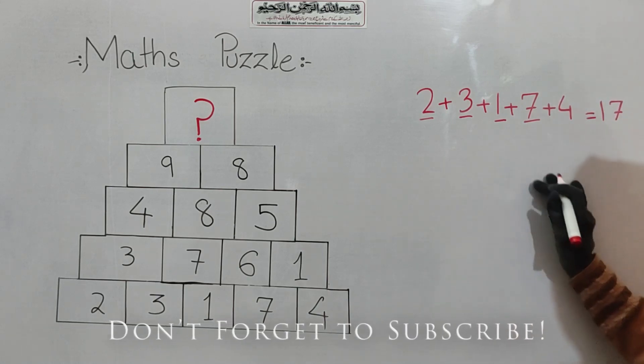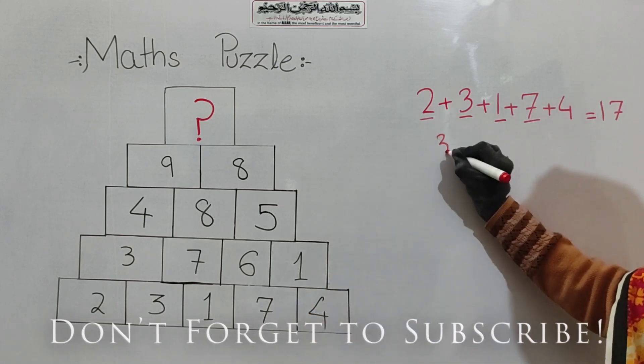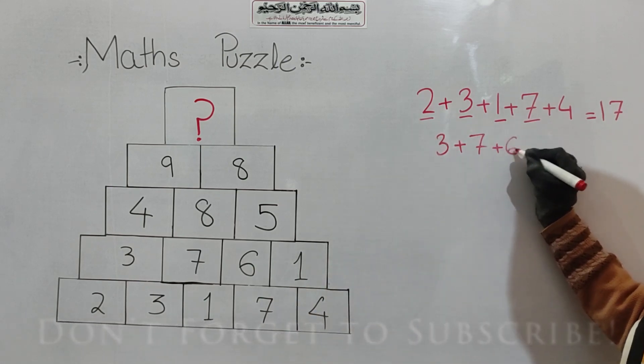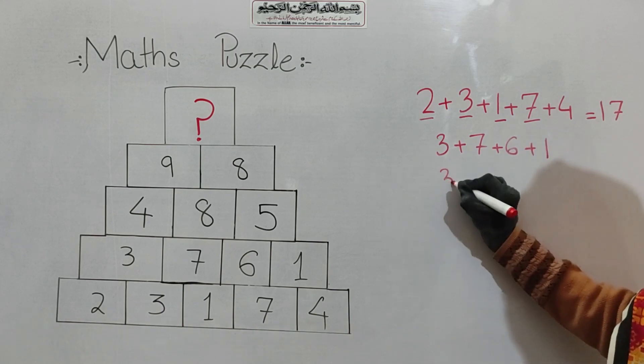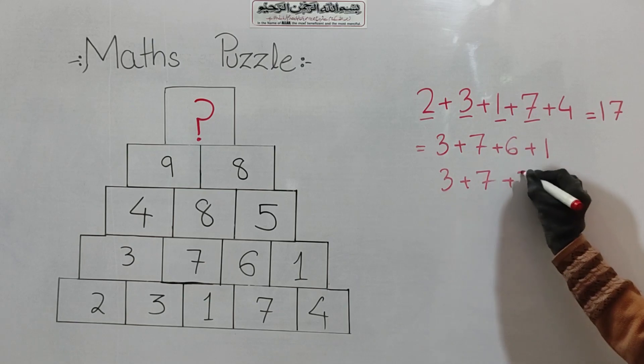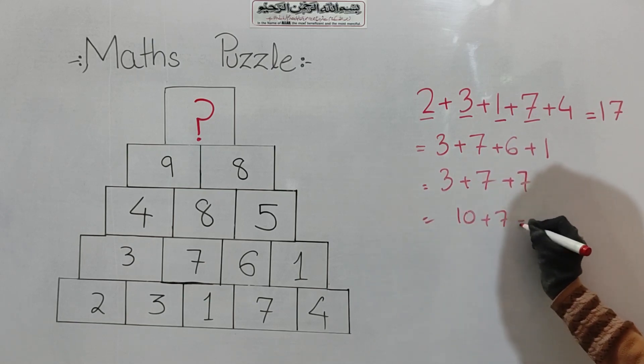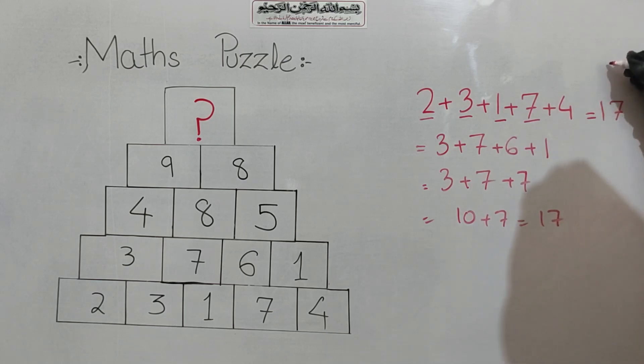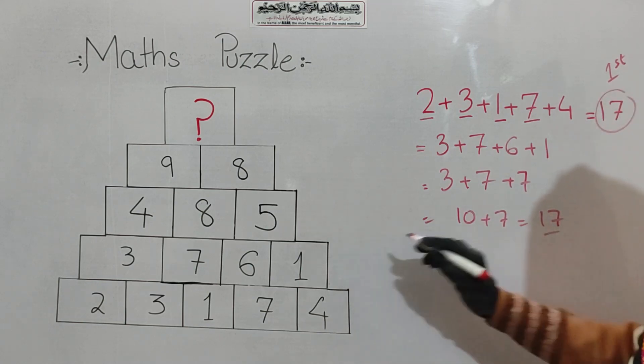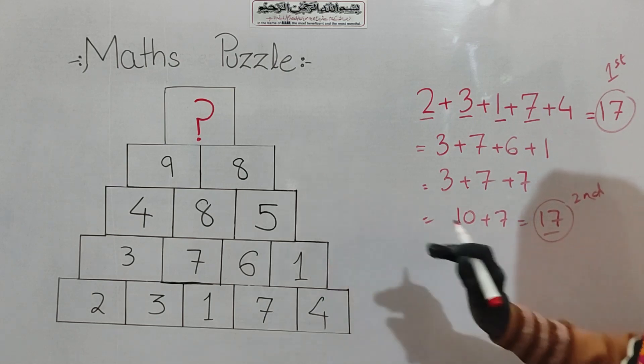So 10 plus 7, and this is also 17. So in the first row, we have 17 as the answer. In the second row, we have 17 as the answer. So this one will apply to all the rows.